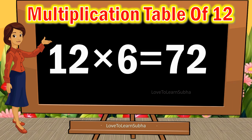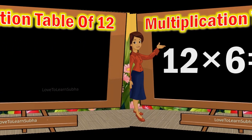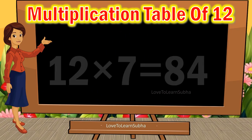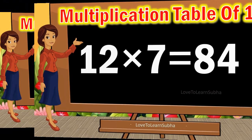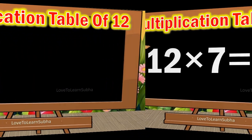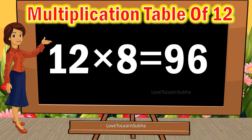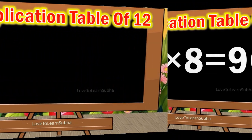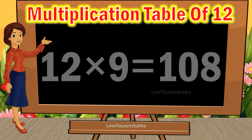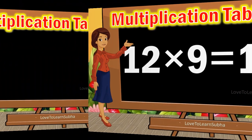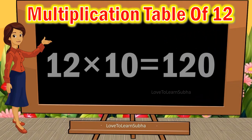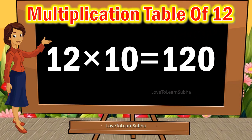12 6s are 72. 12 7s are 84. 12 8s are 96. 12 9s are 108. 12 10s are 120.